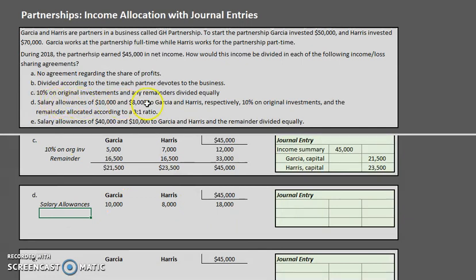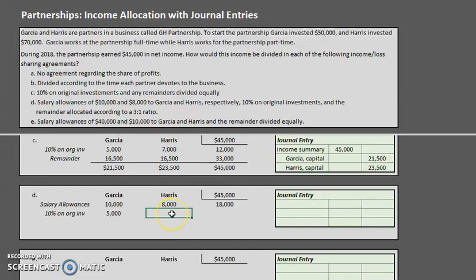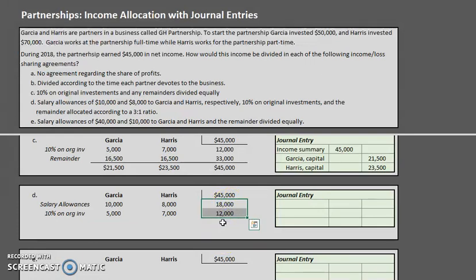We still need to allocate 10% on original investments: 10% of $50,000 is $5,000 to Garcia, and 10% of $70,000 is $7,000 to Harris, adding $12,000 more. Total allocated so far is $30,000. Our remainder is $45,000 minus $30,000, which is $15,000.